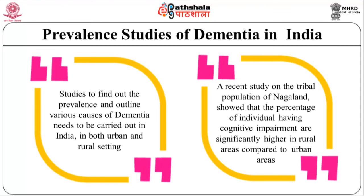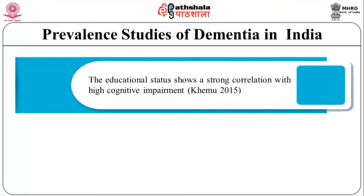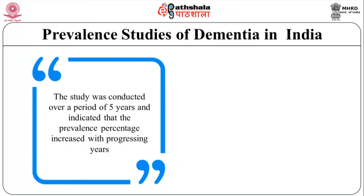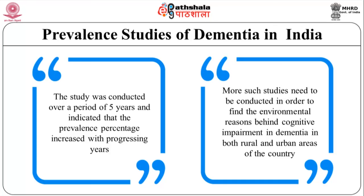A recent study on the tribal population of Nagaland showed that the percentage of individuals having cognitive impairment is significantly higher in rural areas compared to urban areas. It was also observed that along with age, educational status shows a strong correlation with high cognitive impairment. In another study conducted on over a lakh individuals from Kolkata, India, the prevalence of dementia was less compared to that observed in European countries and other developed nations. The study was conducted over a period of 5 years and indicated that the prevalence percentage increased with progressing years. More such studies need to be conducted in order to find the environmental reasons behind cognitive impairment development in dementia in both rural and urban areas of the country.